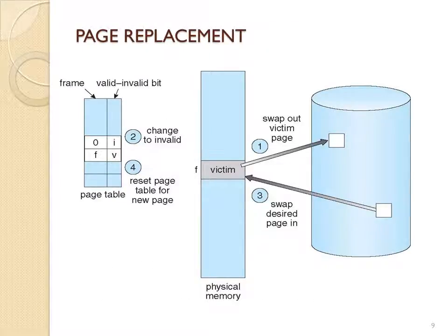Here is a visual of that process: you have your physical memory with frames, and if a page is not valid you need to find a free frame, select a victim if you don't have a free frame, replace that frame, and then mark it as invalid so you don't try to access it and mistake it for a different page. There is also a diagram showing swapping.